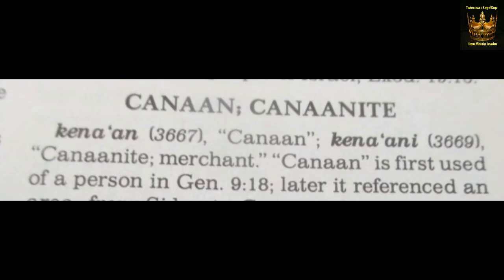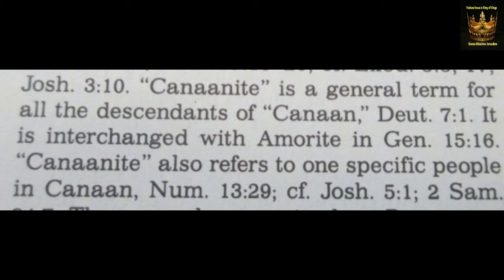Let's look at the Canaanite description here — Strong's 3,667, Canaan. It says here: Canaanite merchant; Canaan is first used as a person in Genesis 9:18. Joshua 3:10 — Canaanite is a general term for all the descendants of Canaan. Deuteronomy 7:1 — it is interchanged with Amorite in Genesis 15:16. Canaanite also refers to one specific people in Canaan, Numbers 13:29. It gives some more verses which have to do with Joshua, which I'm going to show you as well.